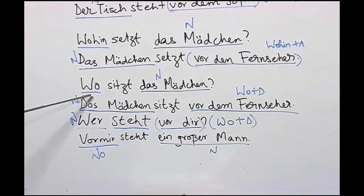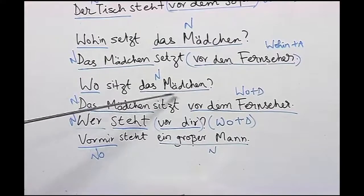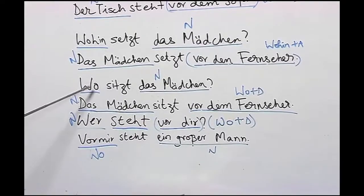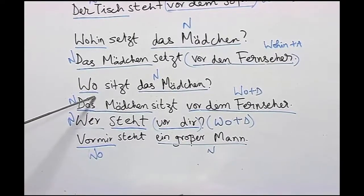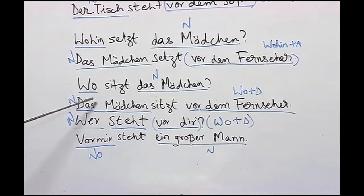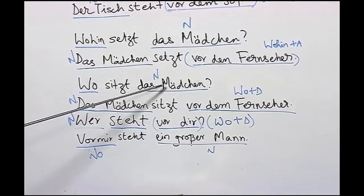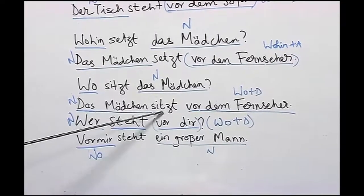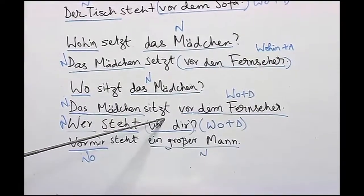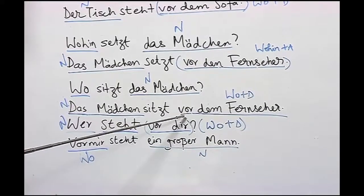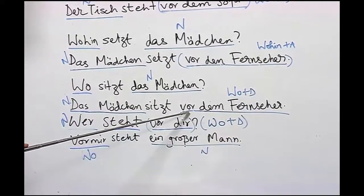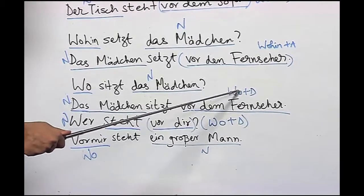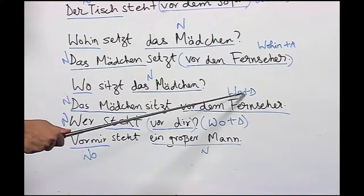Now let us look at this question: Wo setzt das Mädchen? Das Mädchen sitzt vor dem Fernseher. With 'wo' we form a dative question. The nominative is 'das Mädchen', and we begin the answer with das Mädchen. The verb 'sitzen' is a dative verb here, and 'vor' is used as a dative preposition. So we have the answer 'vor dem Fernseher', which answers the wo question.